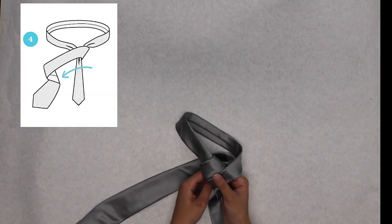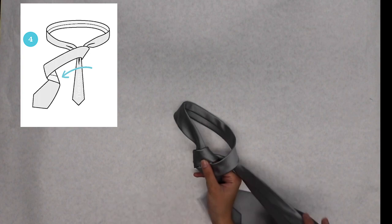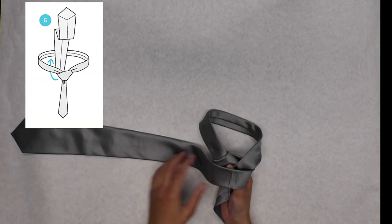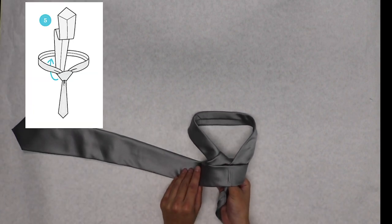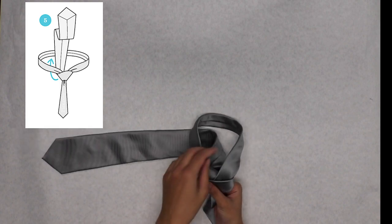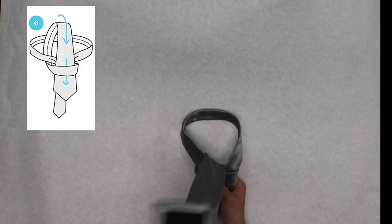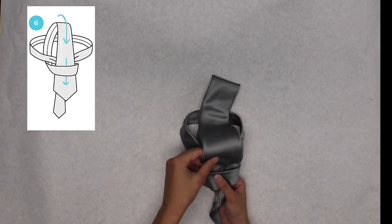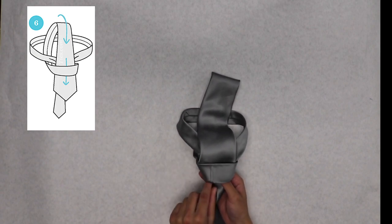After that, loop the big tie around the knot. Once you wrap around the knot, go under and over with the big tie. Make a hole when you wrap it around and put the big tie through the hole.